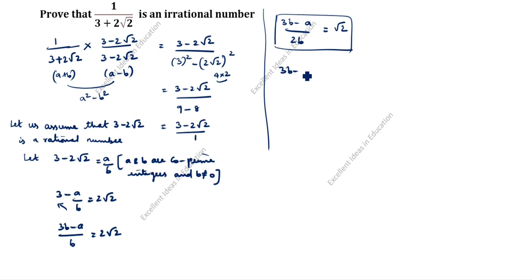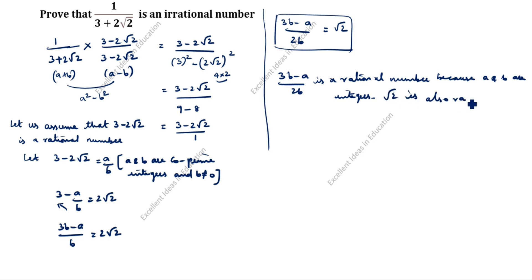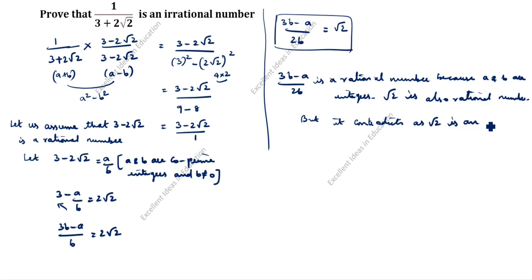Now, 3b minus a divided by 2b is a rational number because a and b are integers. This means root 2 would also be a rational number. But this contradicts the fact that root 2 is an irrational number.